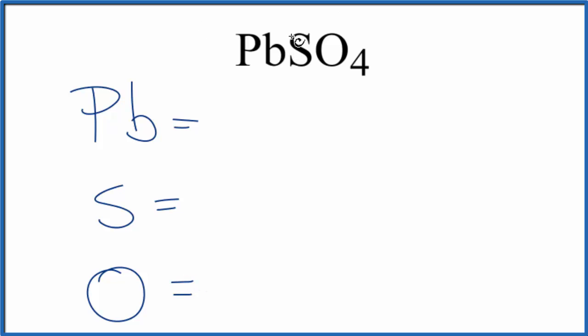For lead, there's nothing written, so we assume that there's a one there. So we have one lead atom, and again, nothing written, we assume one. So one sulfur atom, and then four, the subscript for oxygen, so four oxygen atoms.